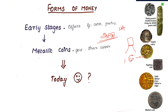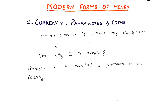Now today, in modern times, what is money? Money exists in two major forms. The first form is currency — that is, coins and notes that we use as a controller of exchange.